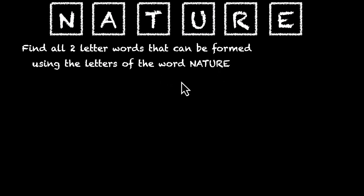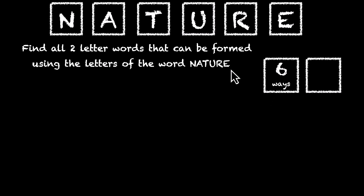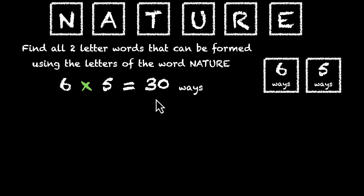Let's do this together. So a two-letter word has one and two — two letters. How could we fill the first place? We have six different letters, so this can be done in six ways. We can pick any one of them. And if we pick one, we'll have five left, so the next place can be filled in five ways. Six times five is 30 ways, which means the answer is 30.